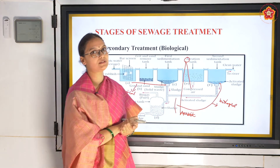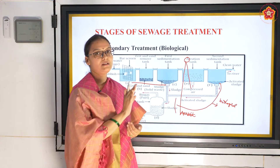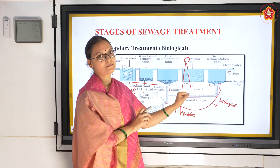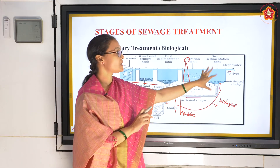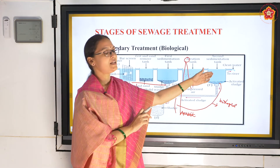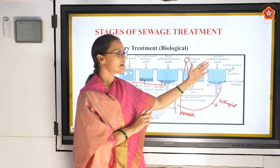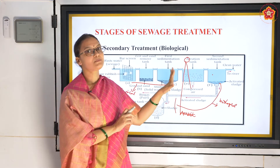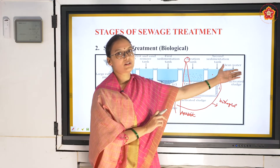We want to check the purity of the water. There is something called BOD - biochemical oxygen demand - which checks how much oxygen has been consumed to remove the organic matter. If the organisms require more oxygen, that means there is more organic matter. Once the BOD is zero or minimal, the water is purified and sent to rivers or other water bodies.